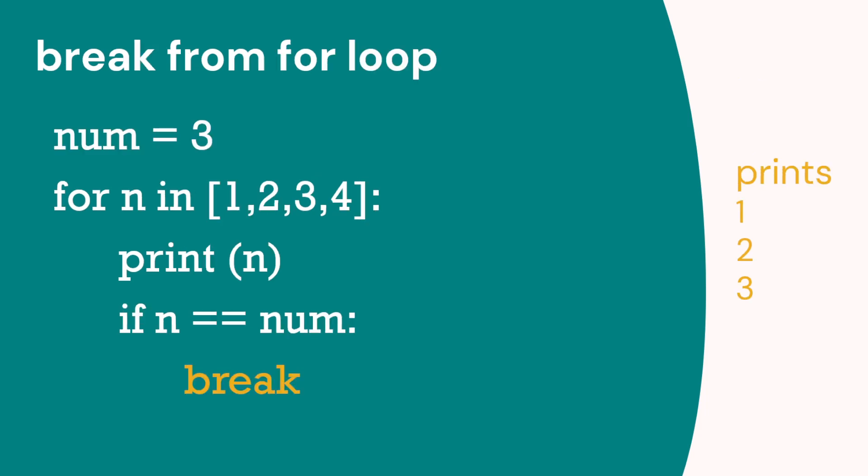We can also use the word break. So here we're going to print 1, 2, 3, 4, but if one of those numbers matches num, which equals 3, then we break out of the loop. So we print 1, 2, 3, but then we come out the loop so 4 doesn't print. So that's break.